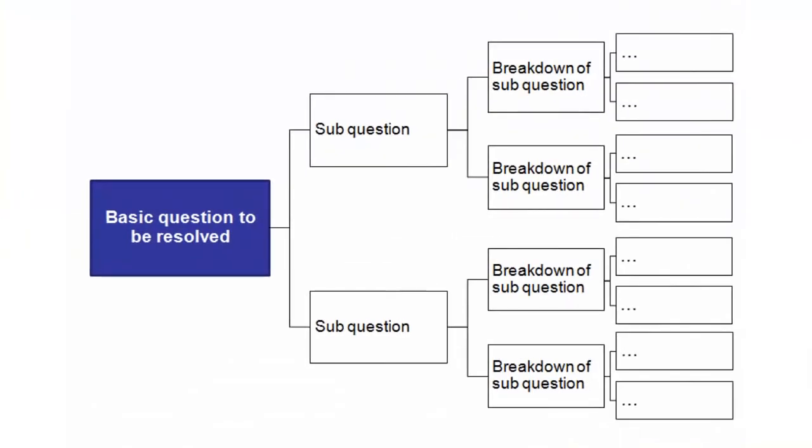An Issue Tree works by setting out the basic question to be resolved on the left-hand side, then breaking out this question into increasingly specific questions as you go from left to right.